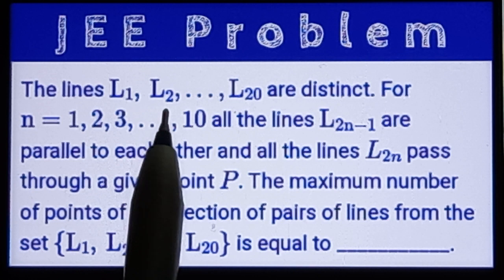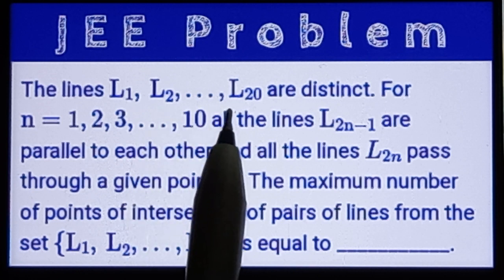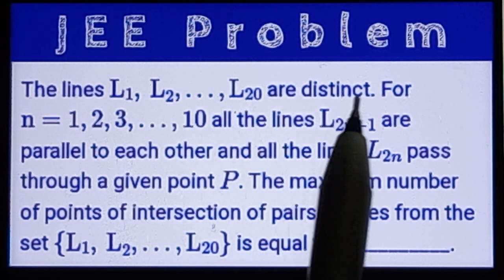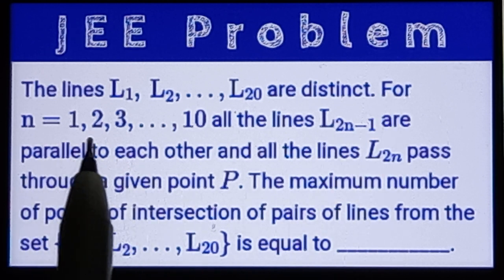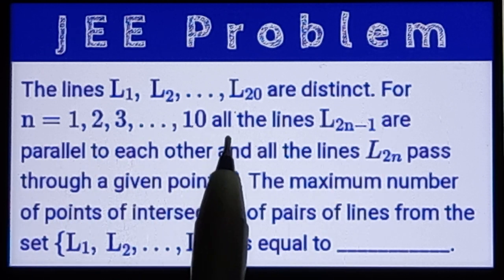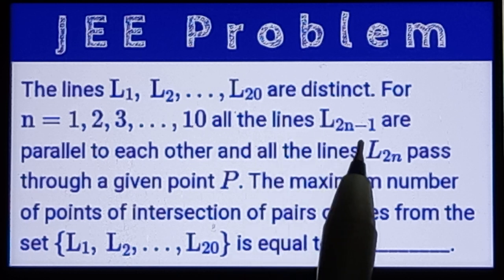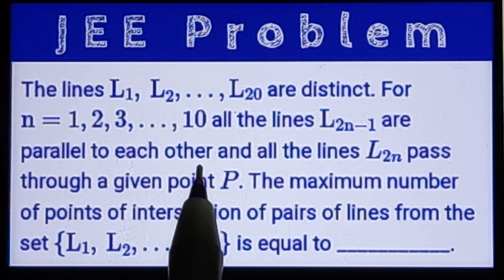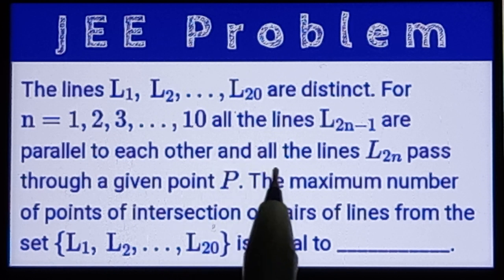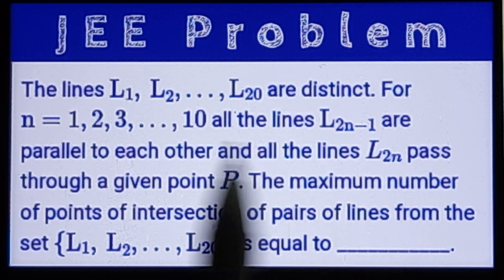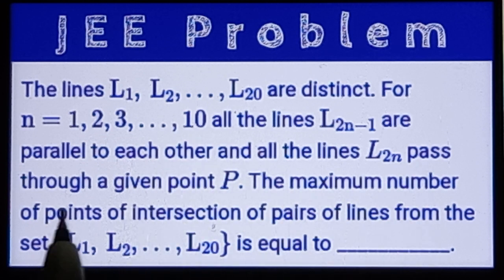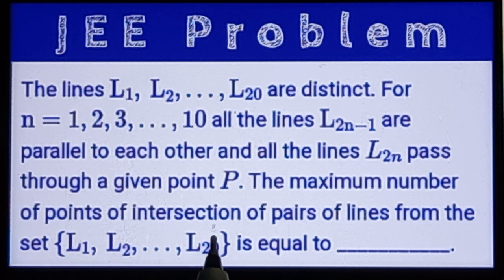The lines l1, l2, l3 up to l20 are distinct for n equals 1, 2, 3 up to 10. All the lines l(2n-1) are parallel to each other, and all the lines l(2n) for n equal to 1, 2, 3 up to 10 pass through a given point. The maximum number of points of intersection of pairs of lines from the set l1, l2, ..., l20 is equals to?